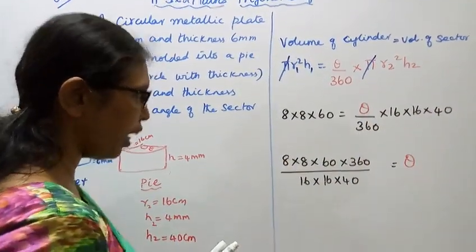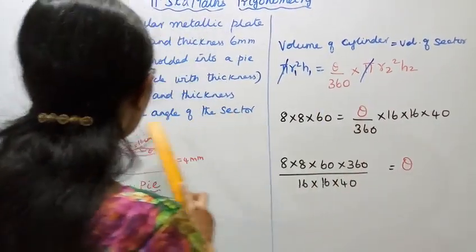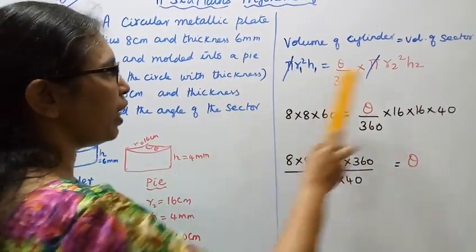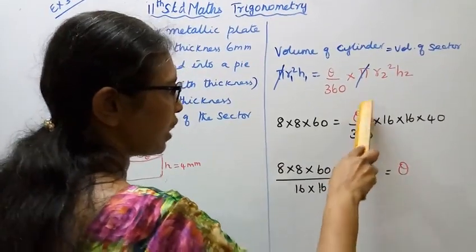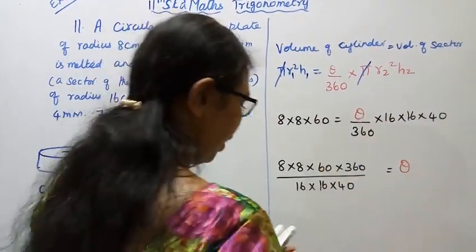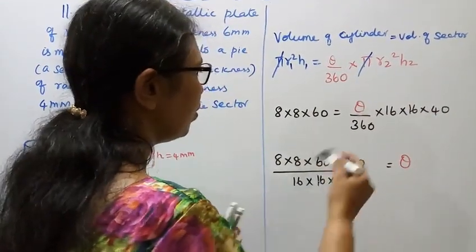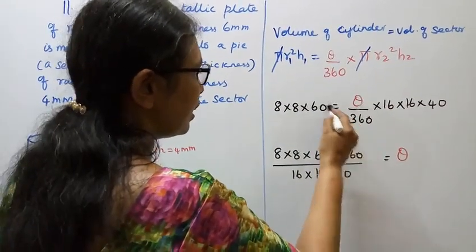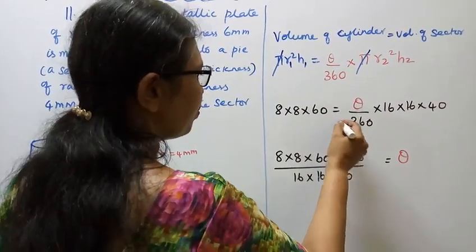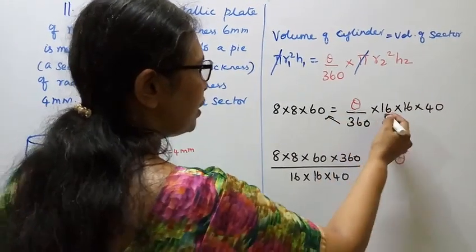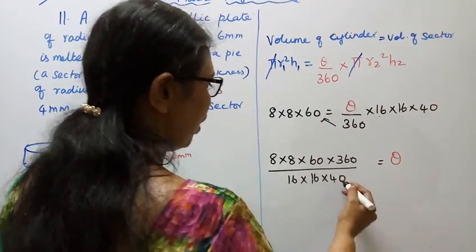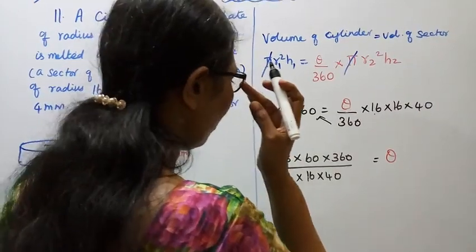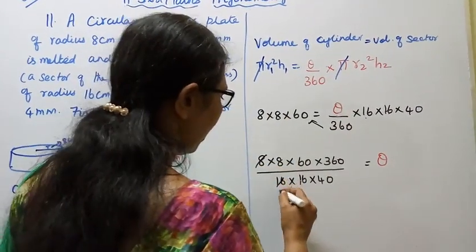Find the angle of the sector, theta. 8 times 8 times 0.6 equals theta by 360 times 16 into 16 into 0.4. Cancel, 8 to 16 cancels to 2 to 4.